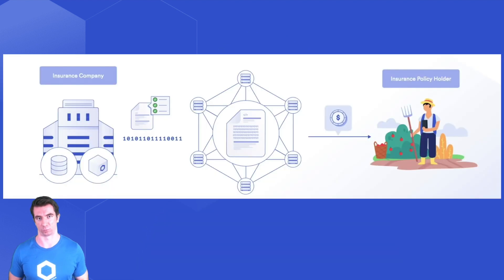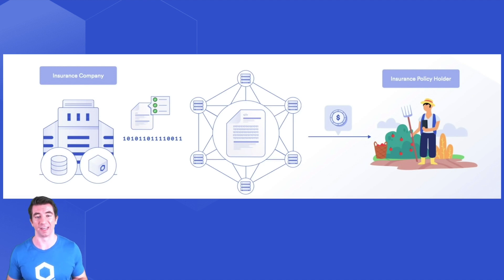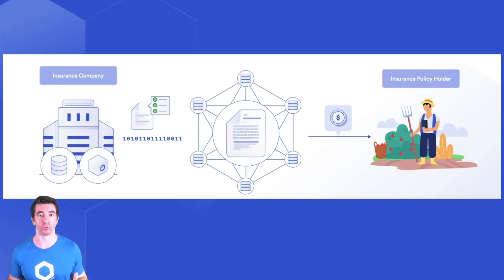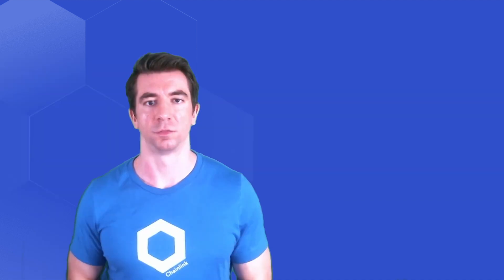For example, your insurance company ultimately approves or denies whether or not you get paid on your claims because they own the contract. In a decentralized world, whenever you need a surgery, your house gets hit, or any other parameters of the insurance agreement are met, it automatically executes. This is a massive improvement on the model of trust for the world.